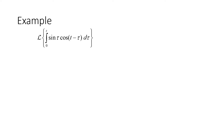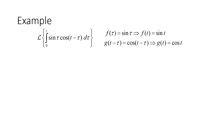We want to identify the function of tau and the function of t minus tau. The function of tau, f of tau, is going to be the sine of tau, so f of t is the sine of t. And g of t minus tau will be the cosine of t minus tau, so g of t is the cosine of t. This integral can be rewritten as sine of t star cosine of t — the convolution of sine of t with cosine of t.